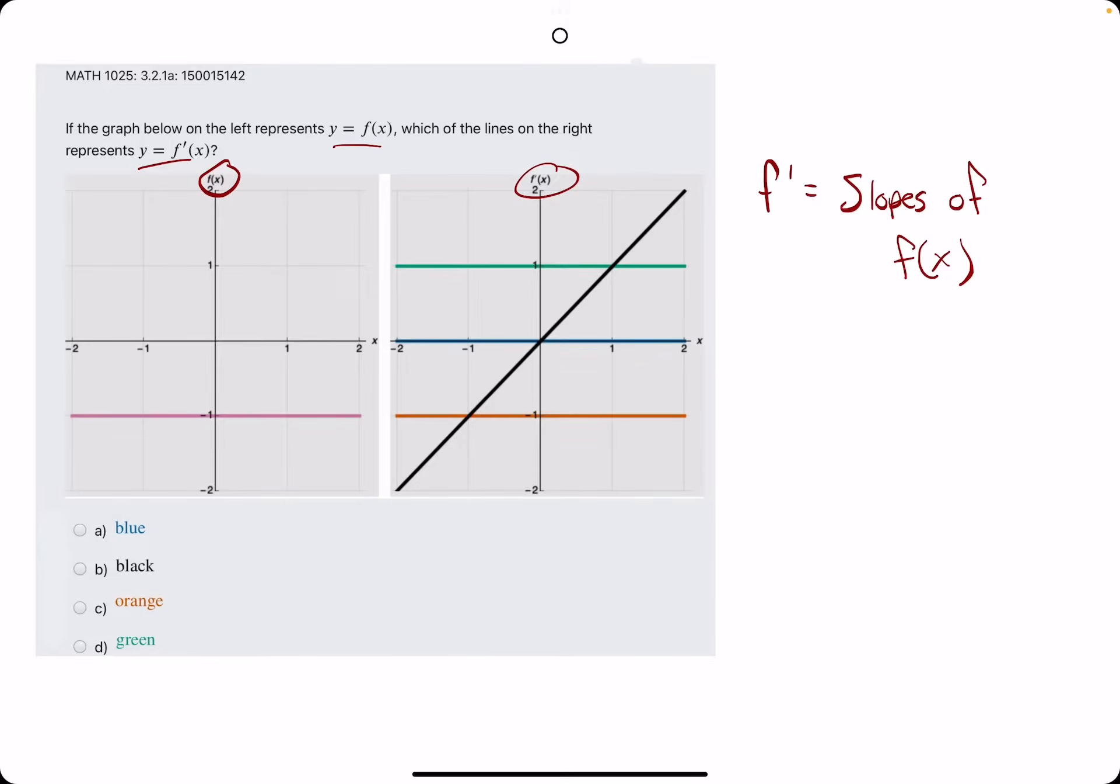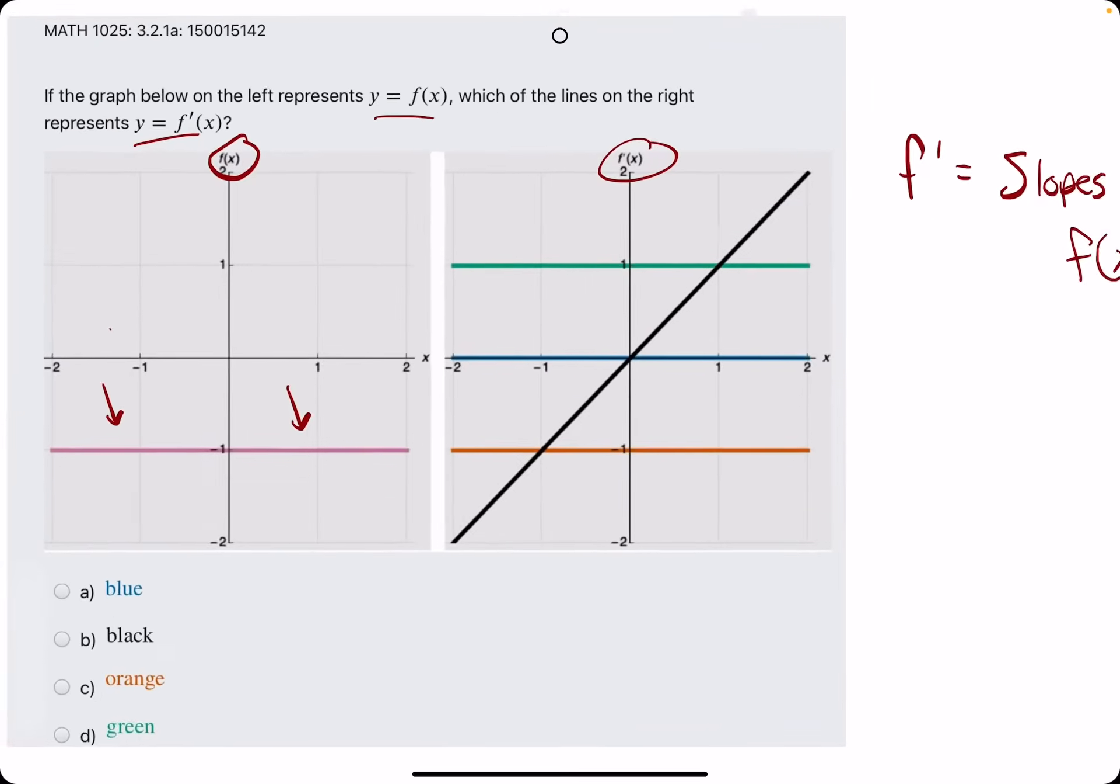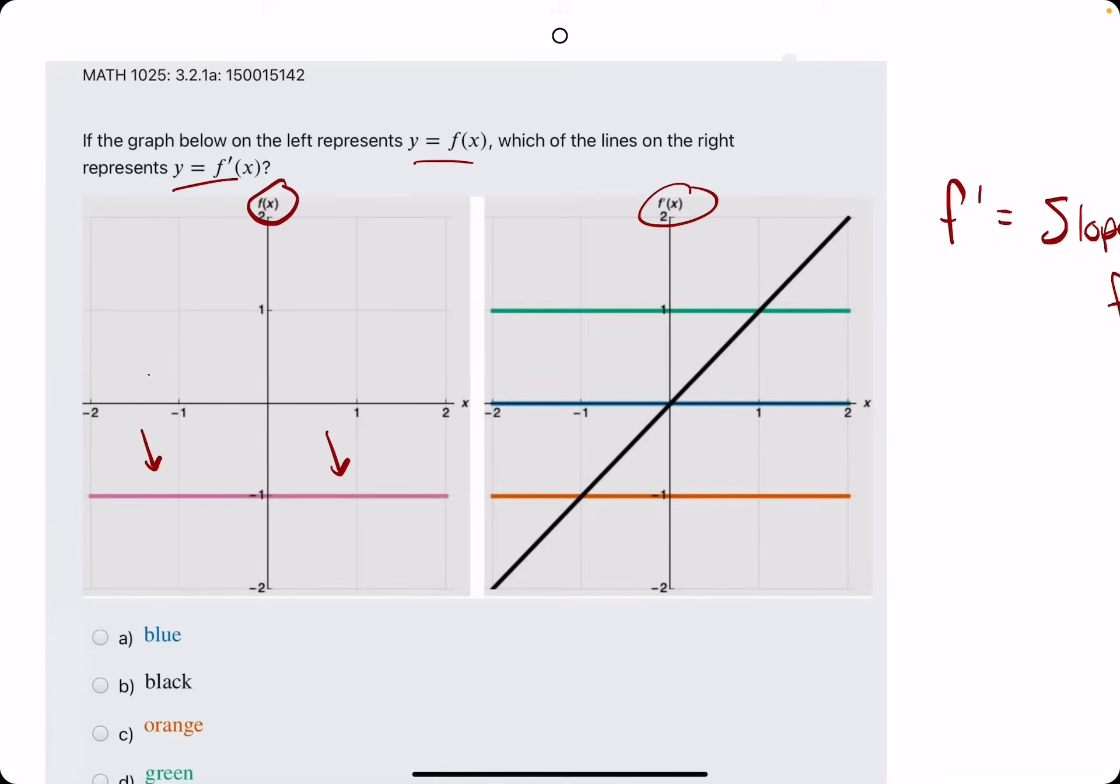The first thing we'll do is identify the slope of f(x). When we look at f(x), this pink line here is a very flat line, so it has a zero slope, the entire function, the entire graph. And so, if the slope is zero,